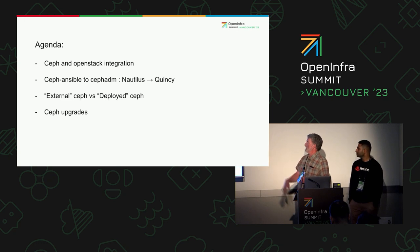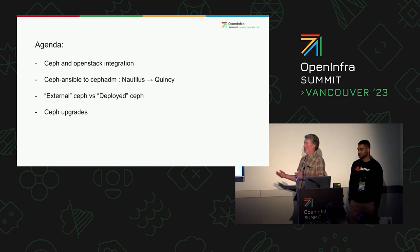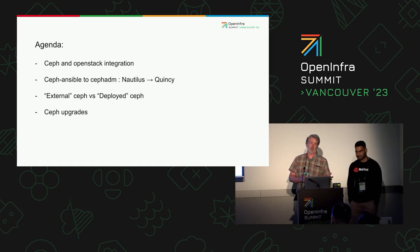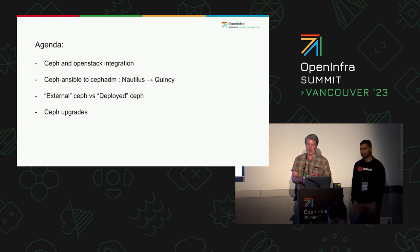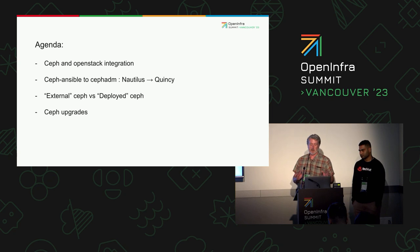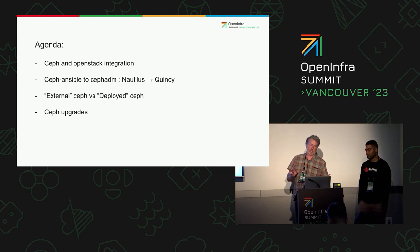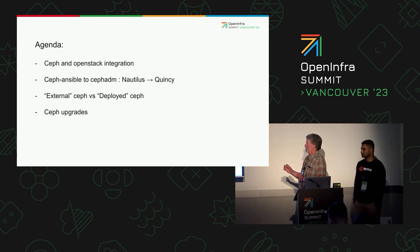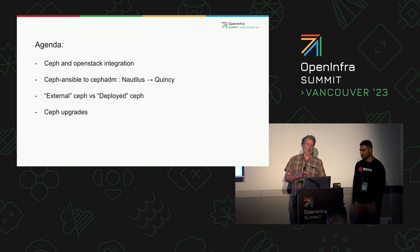We're going to cover basically Ceph and how it's integrated into OpenStack at a very high level. We're going to discuss the transition that the TripleO project took to migrate from using Ceph Ansible in earlier TripleO releases, compatible with earlier Ceph releases, and how we migrated everything to using the new Ceph ADM tooling, and also how we can upgrade clusters consumed by OpenStack from Ceph Nautilus to Quincy. We'll briefly cover some TripleO concepts of externally deployed Ceph and what we now call deployed Ceph in the most recent TripleO release.